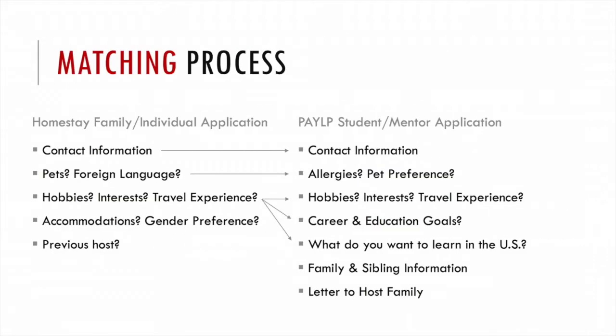The matching process includes both the host family and PAYLP participant applications. We try our best to prioritize the preferences between both parties. For example, pets, allergies, and gender preferences are major considerations. We then review the interests and hobbies. And finally, we always strive for similarities in career aspirations, education goals, and experiences. The participant has also written a letter introducing themselves in further detail. You'll receive all of this information after the match has been made.